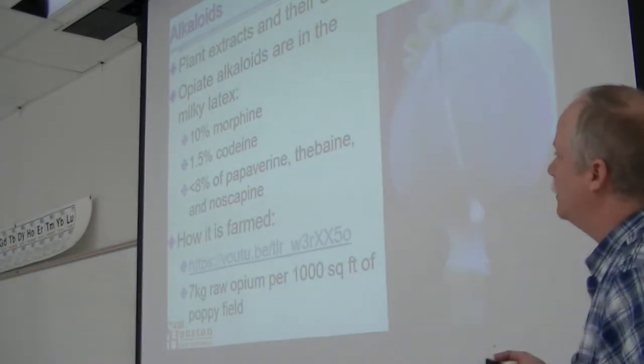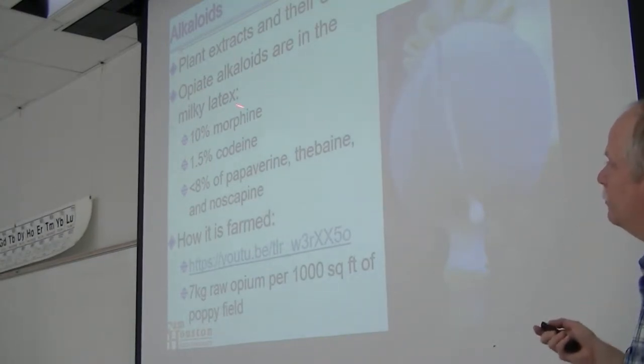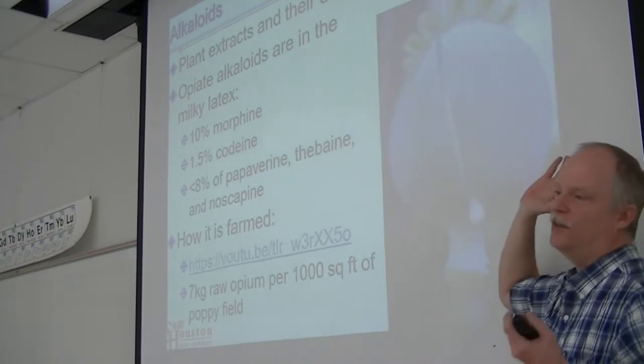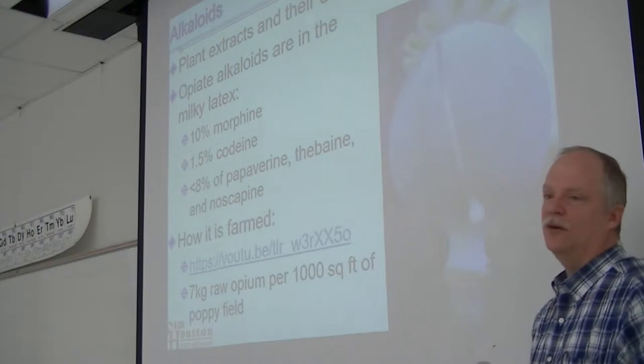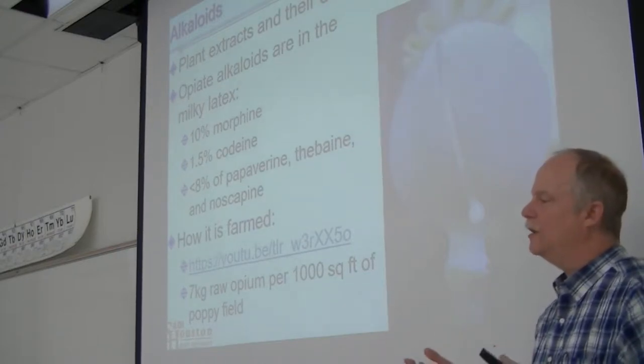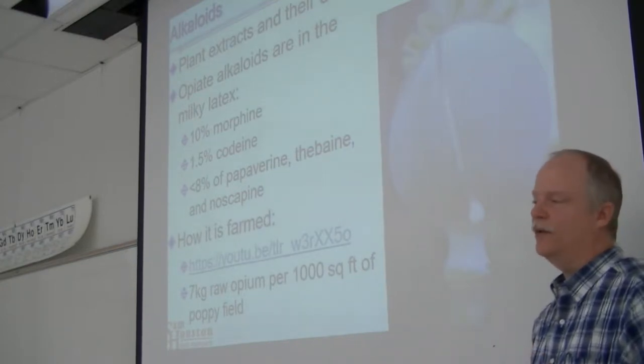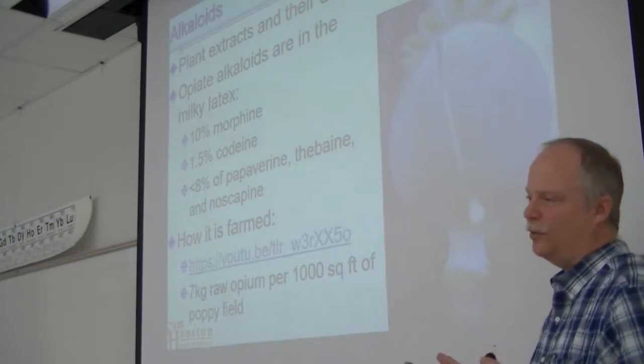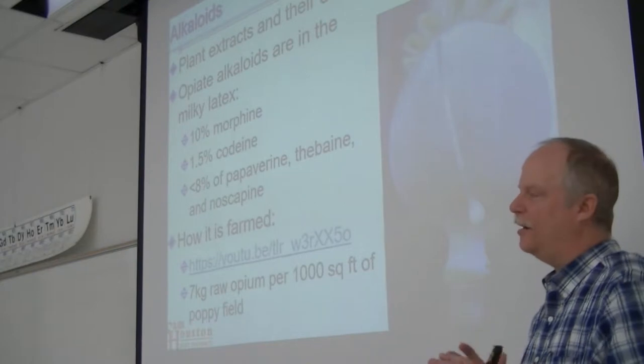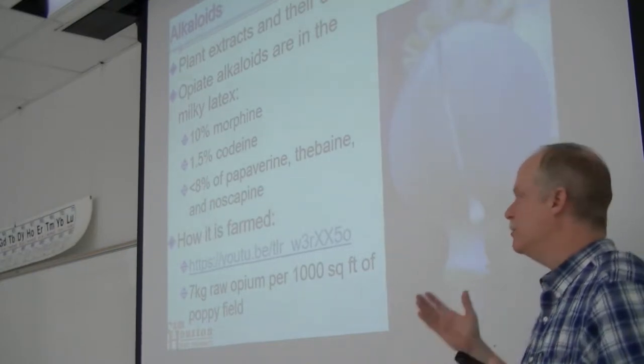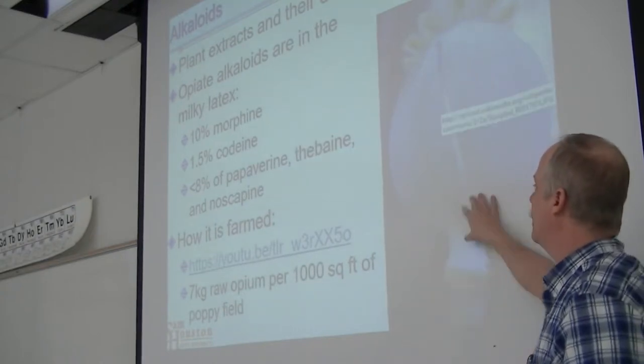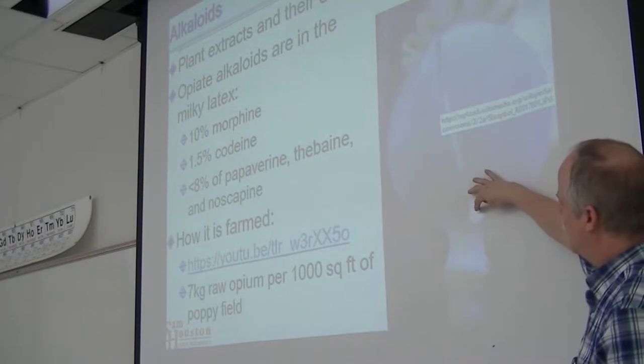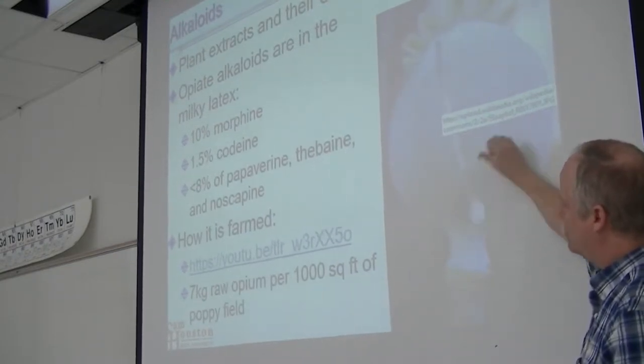Alkaloids are plant extracts and their derivatives. The opiate alkaloids are in the milky latex - any kind of sap or milky extract from a plant is called latex. This is a poppy seed pod. If you scratch that poppy seed pod, you get this milky substance. You let that dry a little bit and scrape it off with a knife.